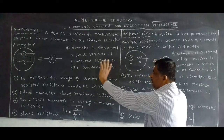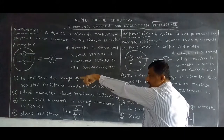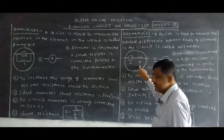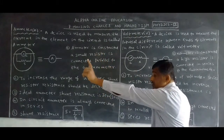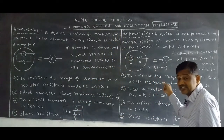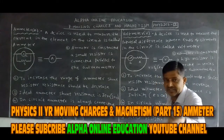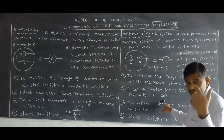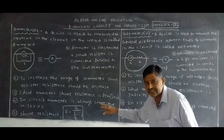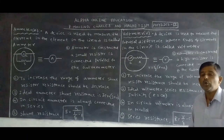Both are quite opposite. Ammeter measures current; voltmeter measures voltage. In ammeter, a small shunt resistor is connected in parallel; in voltmeter, a high resistor is connected in series. To increase the ammeter range, shunt resistance should be decreased; to increase voltmeter range, series resistance should be increased. For ideal ammeter, S = 0; for ideal voltmeter, r = infinity. Ammeter is always connected in series; voltmeter is always connected in parallel. These are the differences between ammeter and voltmeter.